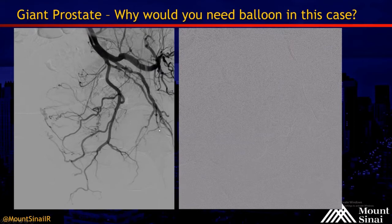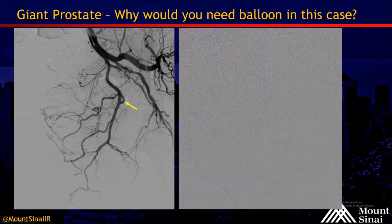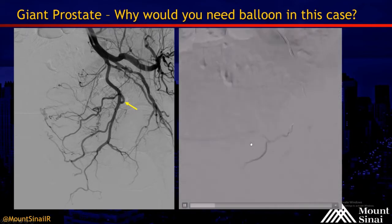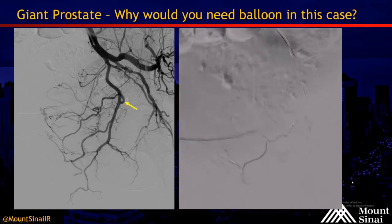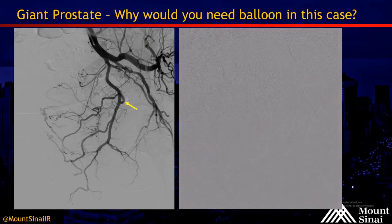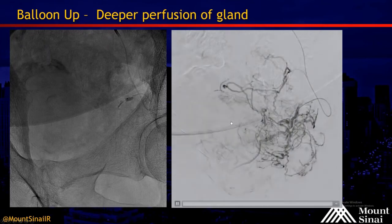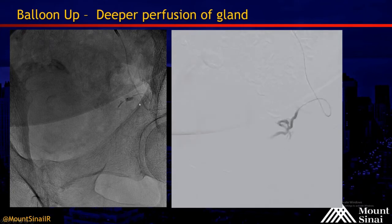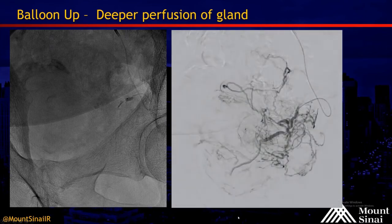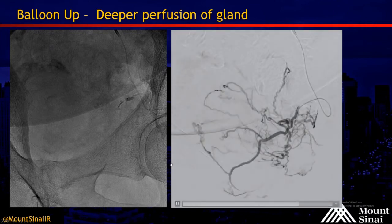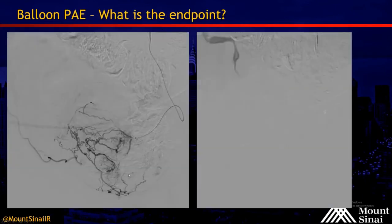Another example where a balloon occlusion microcatheter is favorable is a case like this — probably one of the largest glands I've embolized. Off of the obturator circulation, a prostatic artery is feeding a very large gland, with another anastomosis more distally. In a case like this, you might start embolizing balloon down, then inflate the balloon several cc's into your embolization, and you can see additional arteries open up that you didn't see initially — getting more embolic into the gland. There is early data suggesting that the more embolic delivered into the distal circulation, the better the outcomes.